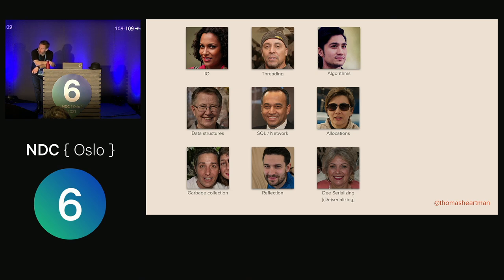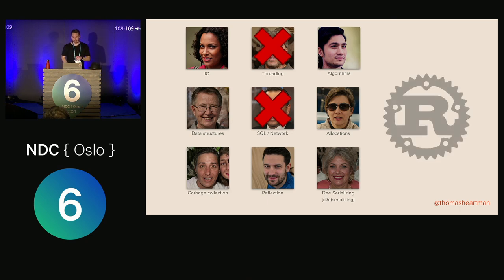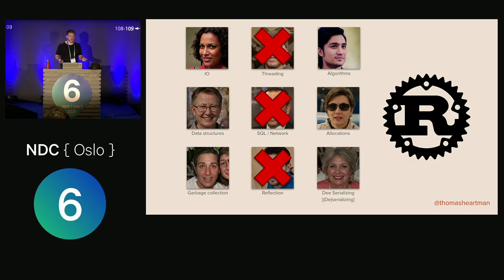We know our application a little bit. We know there's no SQL, no network calls, so we can rule those out completely. We know the application is single-threaded, so that's not an issue. We also know it's written in Rust, which means it has no runtime, so there's no reflection — and Rust isn't garbage collected, so it can't be garbage collection. And now we're left with five suspects.